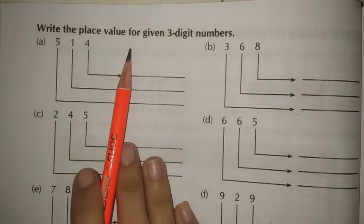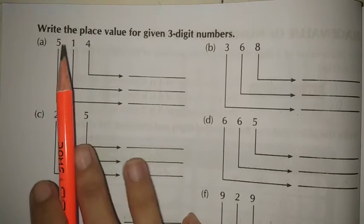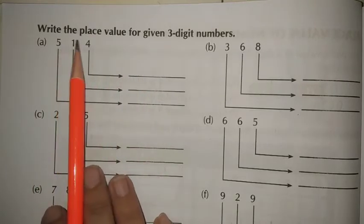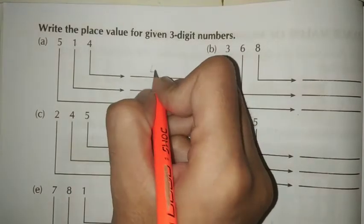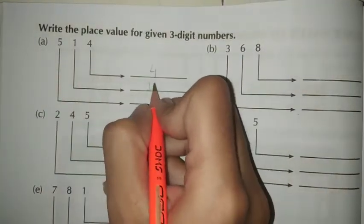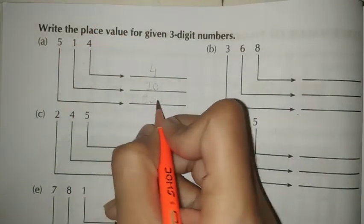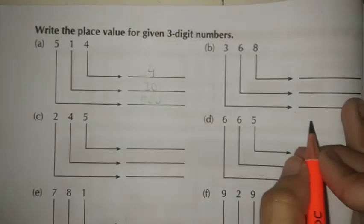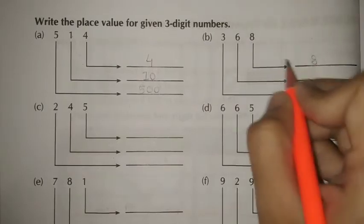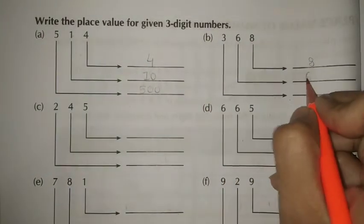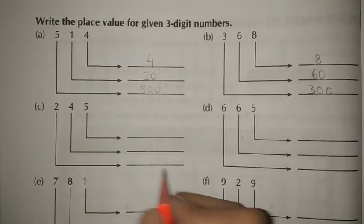Next, write the place value of each digit in the given 3-digit numbers. First is 514: 4 is ones, so here write 4; 1 is tens, so 10; and 5 is hundreds, so 500. Next, 368: 8 is ones, so here 8; 6 is tens, so 60; and 3 is hundreds, so 300.